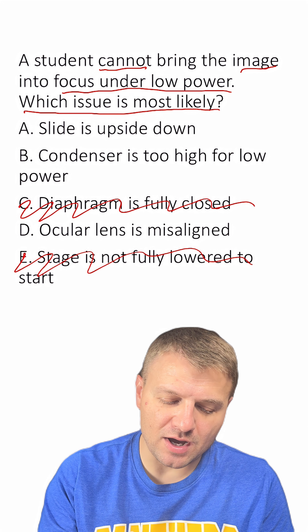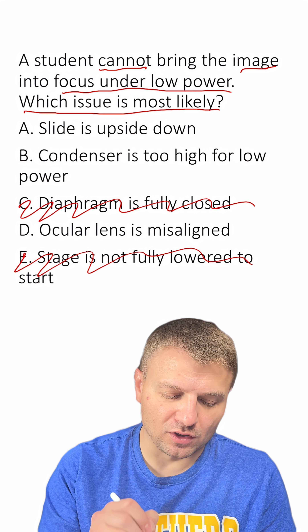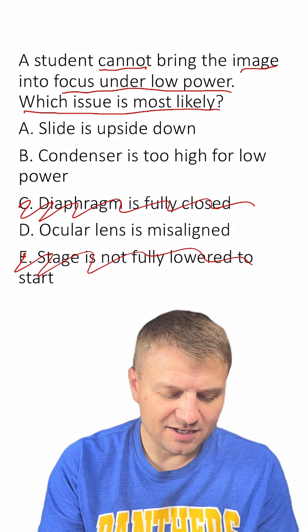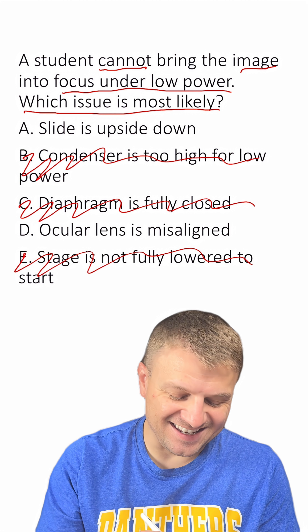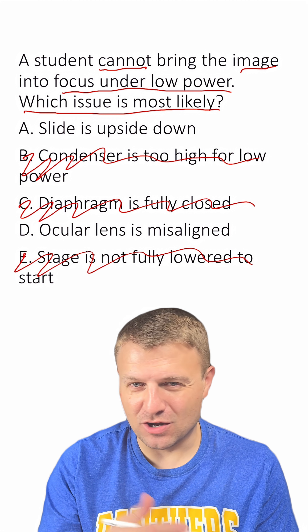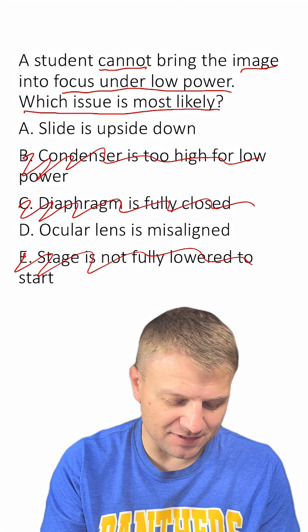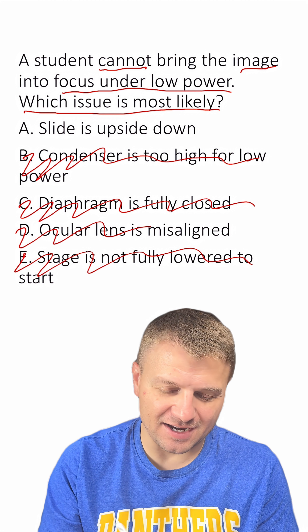B: The condenser is too high for low power — nope, that's not the answer. D: The ocular lens is misaligned — no, you probably wouldn't be able to see it at all if it was misaligned.